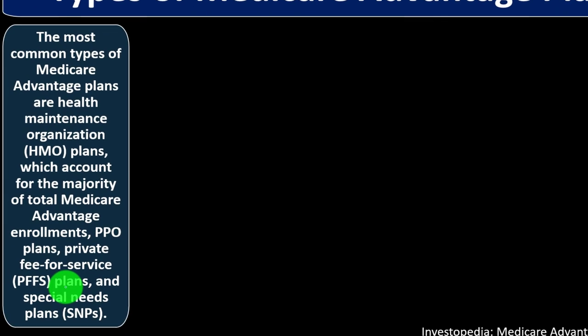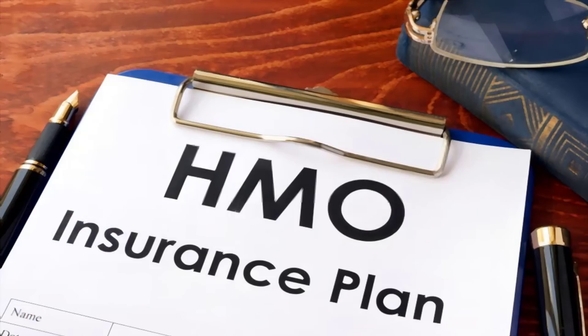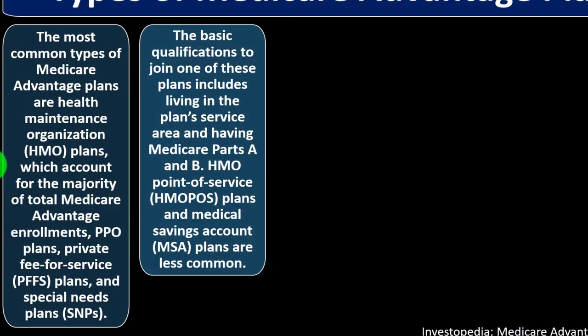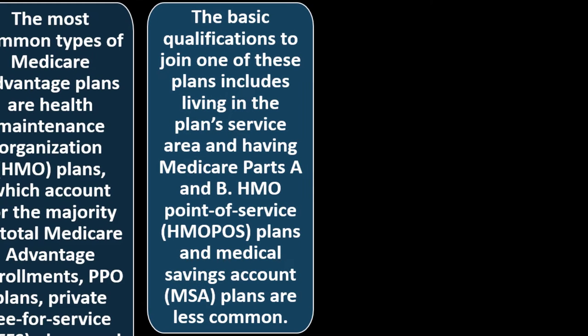Types of Medicare Advantage plans: The most common type are health maintenance organizations — HMO plans — which account for the majority of total Medicare Advantage enrollments. Other types include PPO plans, private fee-for-service (PFFS) plans, and special needs plans. HMOs typically have more restrictive networks but may offer lower premiums in exchange. Basic qualifications to join include living in the plan's service area and having Medicare Part A and B. HMO point-of-service plans and medical savings account plans are less common.